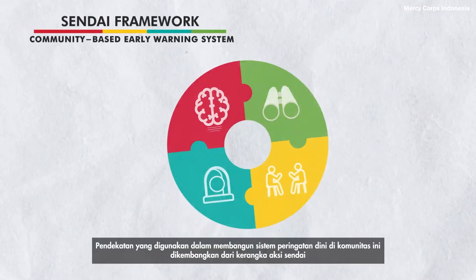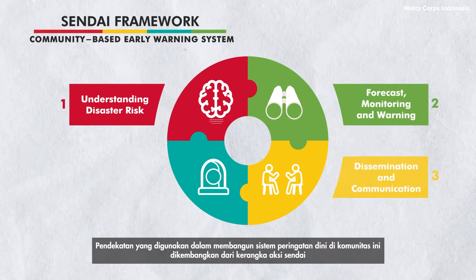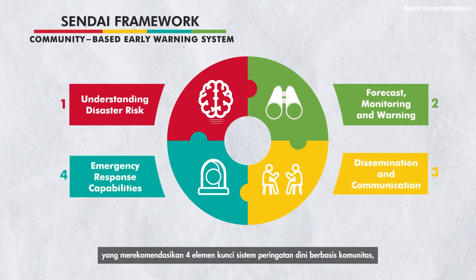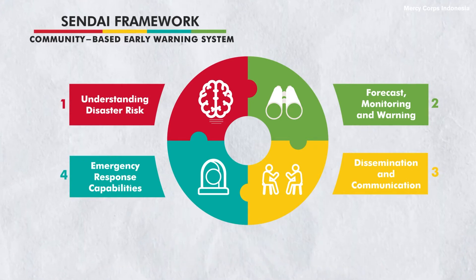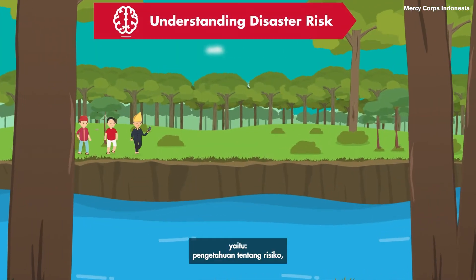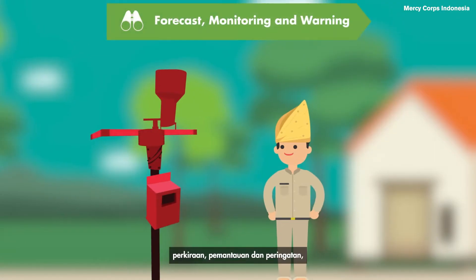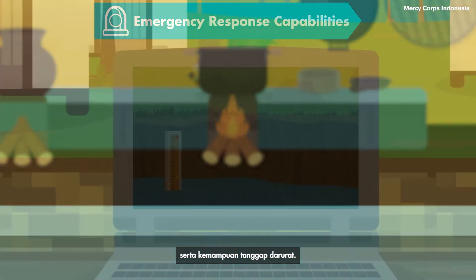The approach used in building a community early warning system is adapted from the Sendai Framework, which recommends four key elements of community-based early warning systems: understanding disaster risk, forecast monitoring and warning, dissemination and communication, and emergency response capabilities.